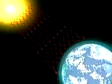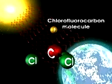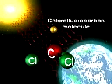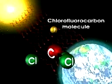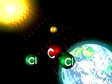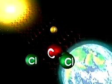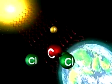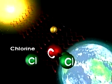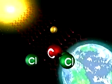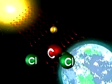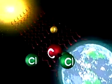A group of gases called chlorofluorocarbons, or CFCs, may pose a threat to the ozone layer. Chlorofluorocarbons are chemical compounds made up of atoms of chlorine, fluorine and carbon. CFCs are used as refrigerants and to make plastic foam insulation.